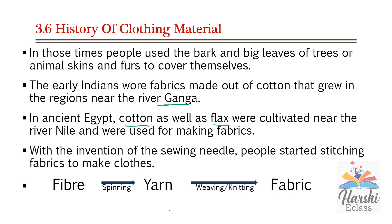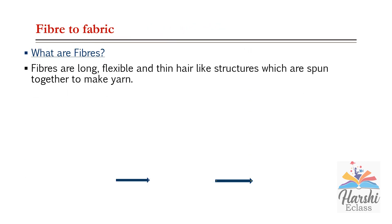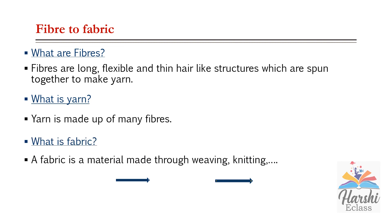Let's revise the chapter. Fibers are long, flexible, and thin hair-like structures which are spun together to make yarn. Yarn is made up of many fibers through the process of spinning. A fabric is a material made through weaving and knitting. In this chapter we discussed two types of fibers: natural fibers and synthetic fibers.